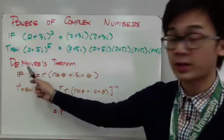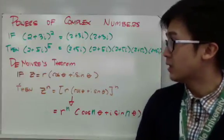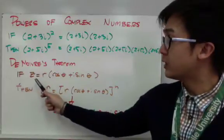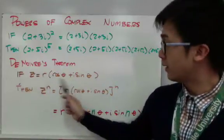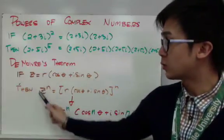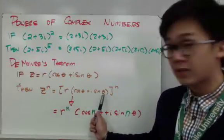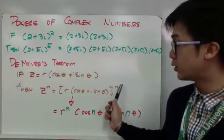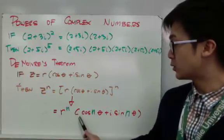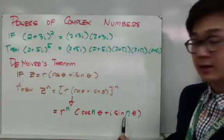That theorem is what we call De Moivre's theorem. De Moivre was a French mathematician who formulated this formula. If we have a complex number converted into trig form like z equals r times cosine theta plus i sine theta, then if we raise this to a power — z to the n, which equals r times cosine theta plus i sine theta all raised to n — it can be simplified using the formula: r to the n times cosine of n times theta plus i sine of n times theta.